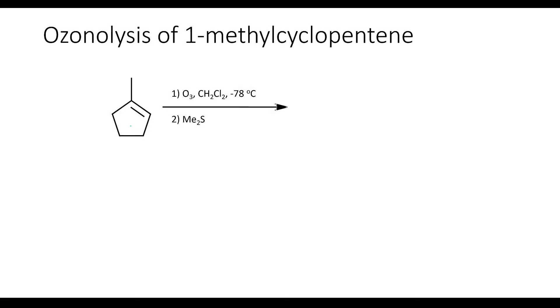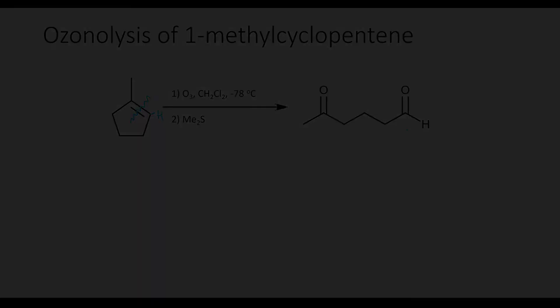In the second example, we expose 1-methylcyclopentene to ozonolysis conditions. Reminding ourselves where the hydrogen is and where we're going to break the bond, the resulting product is this structure. Notice that on the right we have an aldehyde, whereas in the case of potassium permanganate, we had a carboxylic acid there. Hope this was useful in helping you build your organic synthetic repertoire, and stay tuned for more videos where we're going to discuss more reactions.